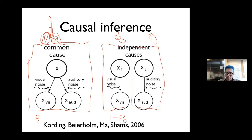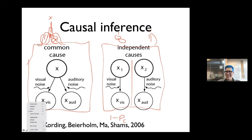So we have a model that's fully specified in a Bayesian way. I can assign a prior probability for the common cause versus the independent cause. Under which circumstances would you believe there's a common cause? You'll believe it if the vision and auditory stimuli are very close to one another. You'll believe they're independent if they're far away from one another.